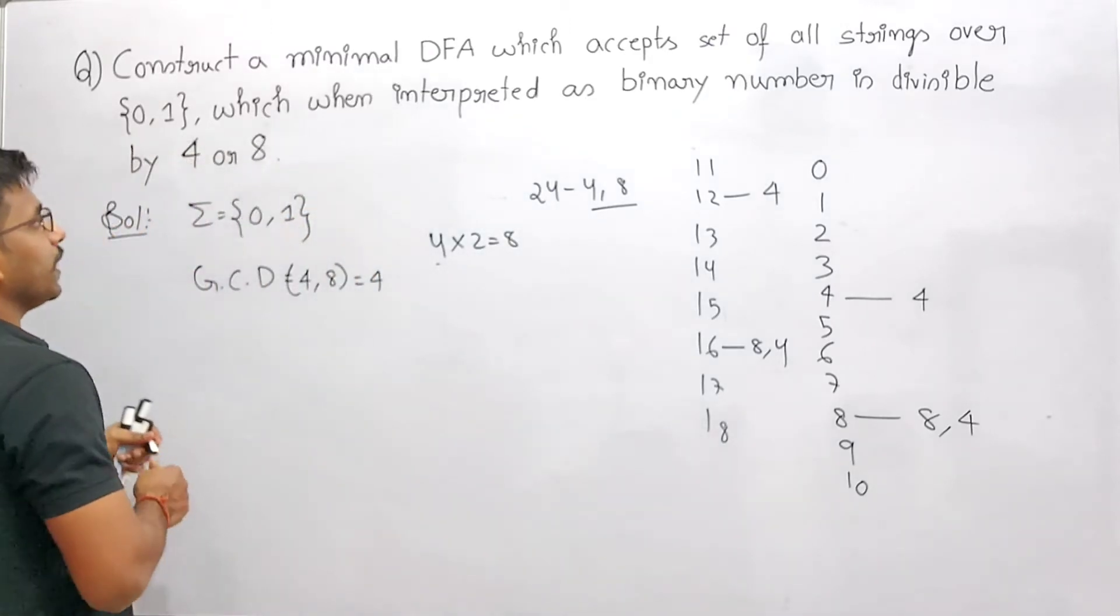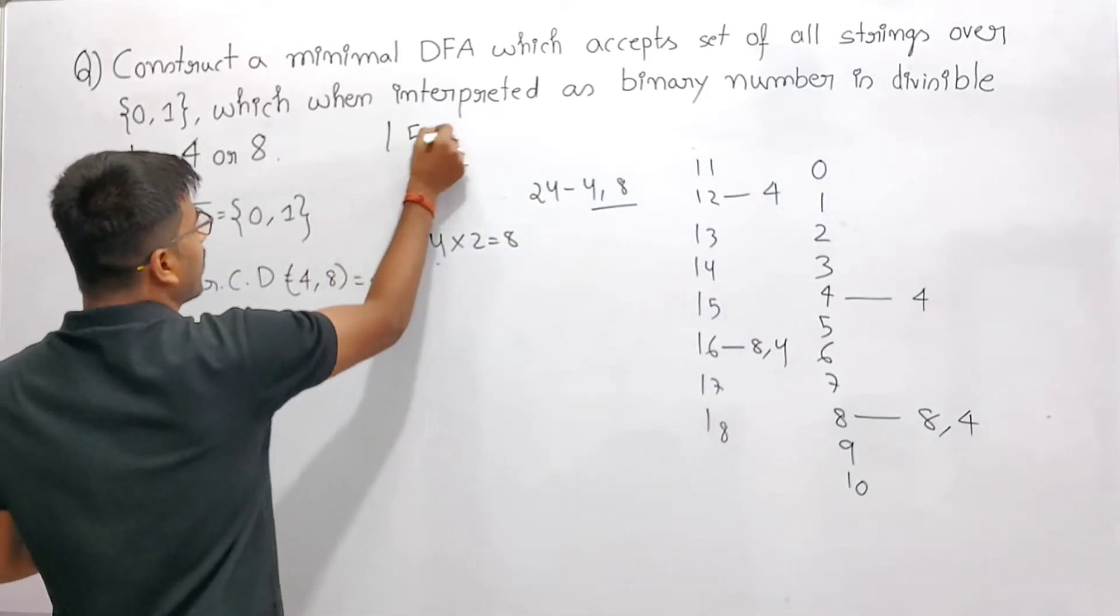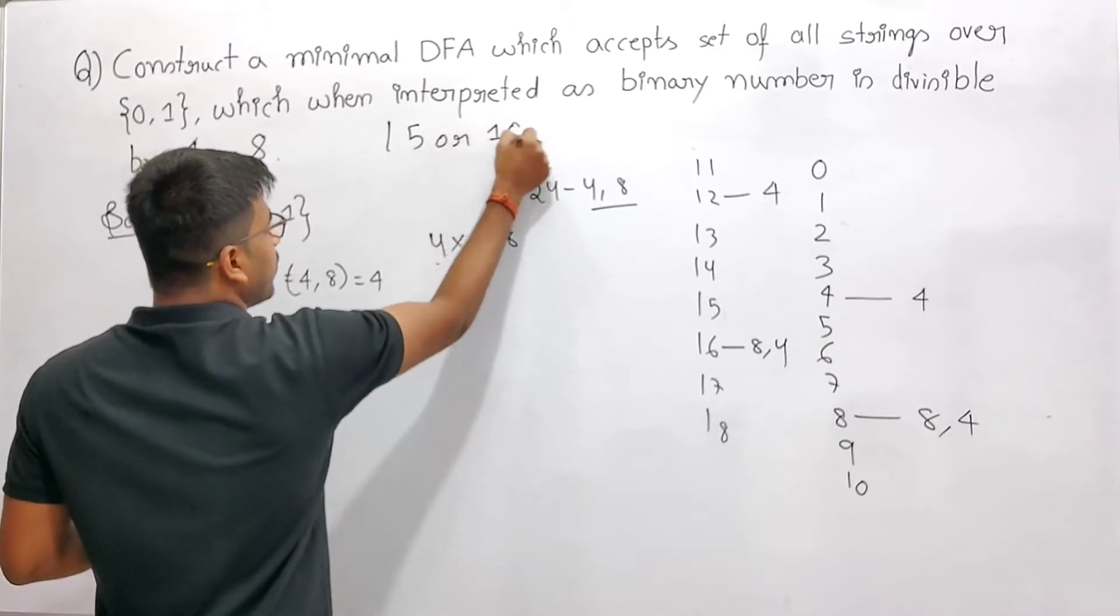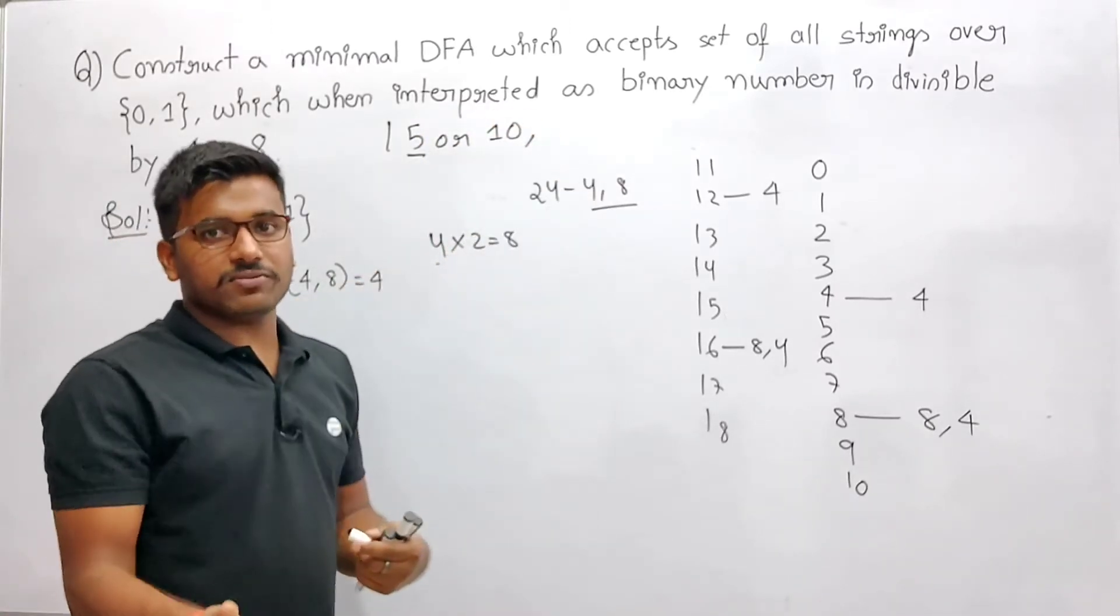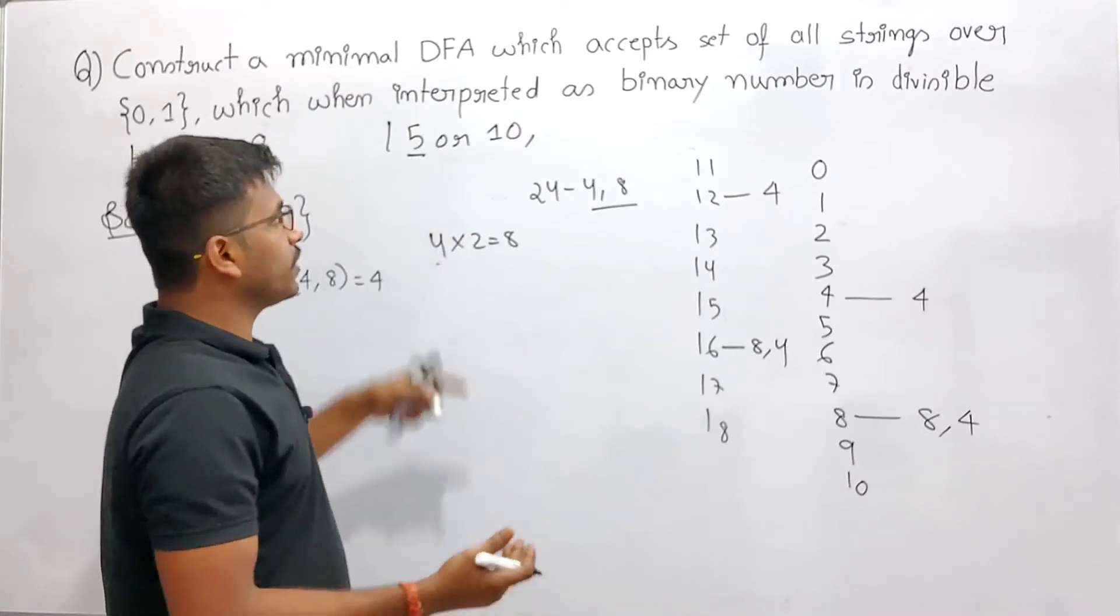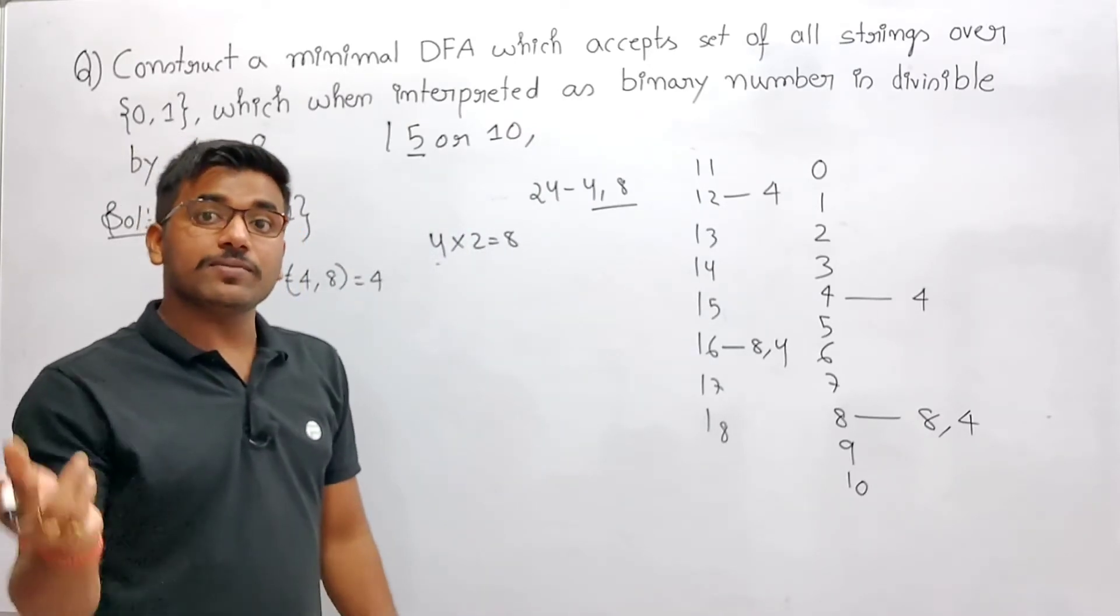So sometimes you have to find the LCM by seeing the number, and sometimes you have to find the GCD. Like if I give you 5 or 10, then again the number which is divisible by 10 is even divisible by 5.